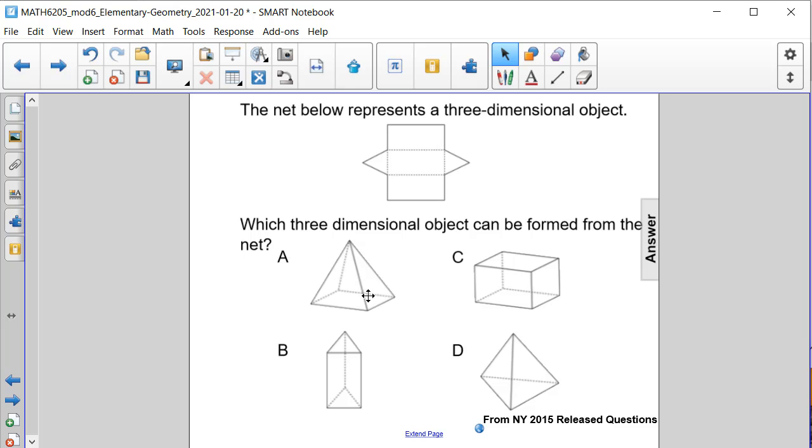Is it A, a square base pyramid? Is it B, a triangular prism? Is it C, a rectangular prism? Or is it D, a triangular base pyramid?